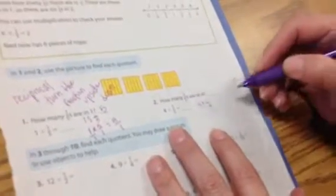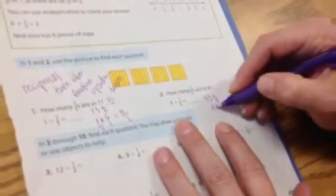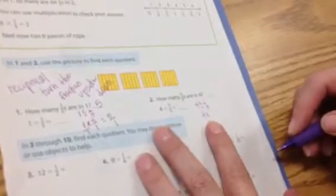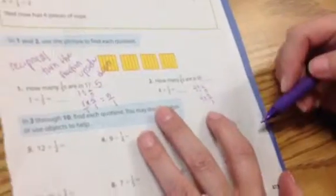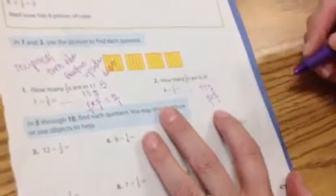Alright, let's do this next one. First, you rewrite the problem. Then, you change the operation. And then, you do the reciprocal of one-fifth, which is 5 over 1. Put the whole number over a 1.